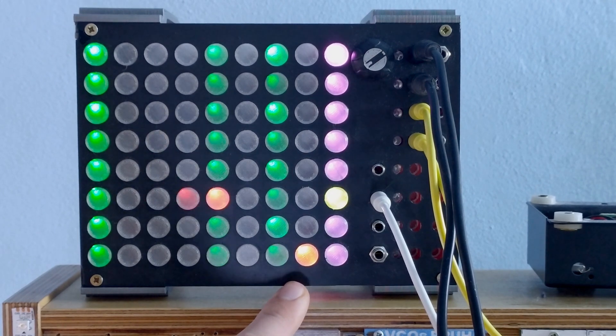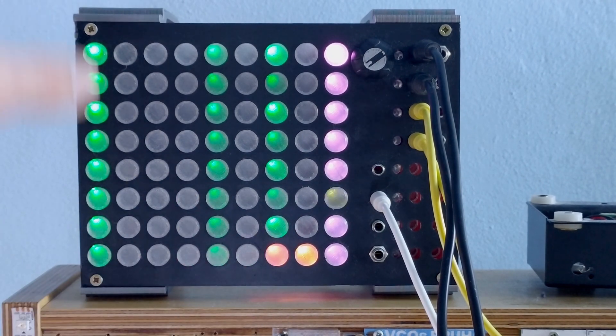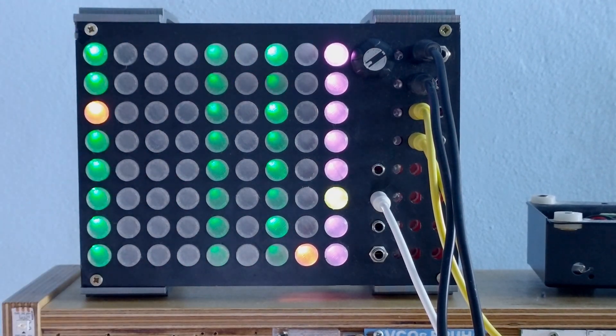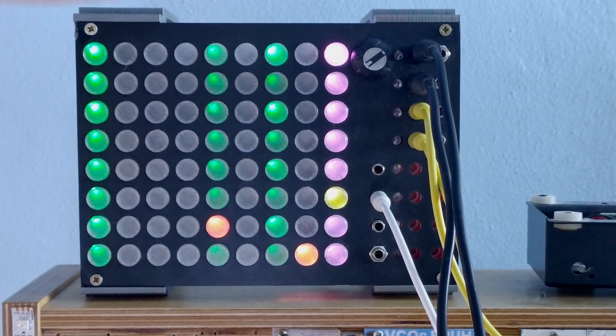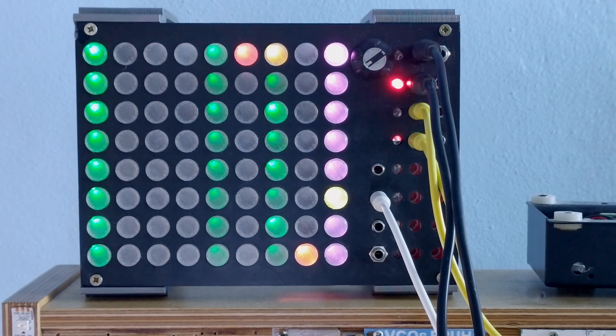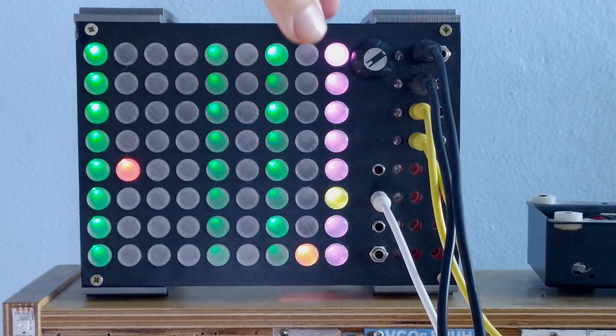So you have this orange LED and it means that that is the end of the sequence. And you can also kind of see the overview of how many steps are selected on each step. This takes the sum of all channels, I think, if I remember correctly.